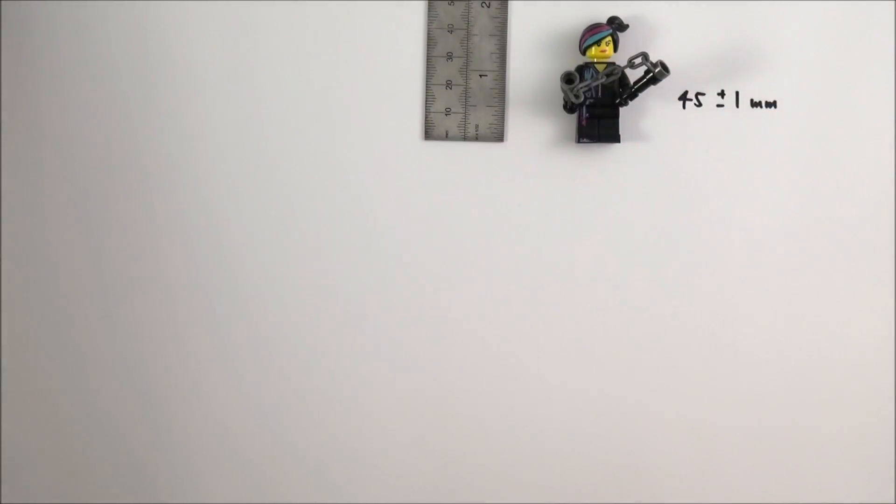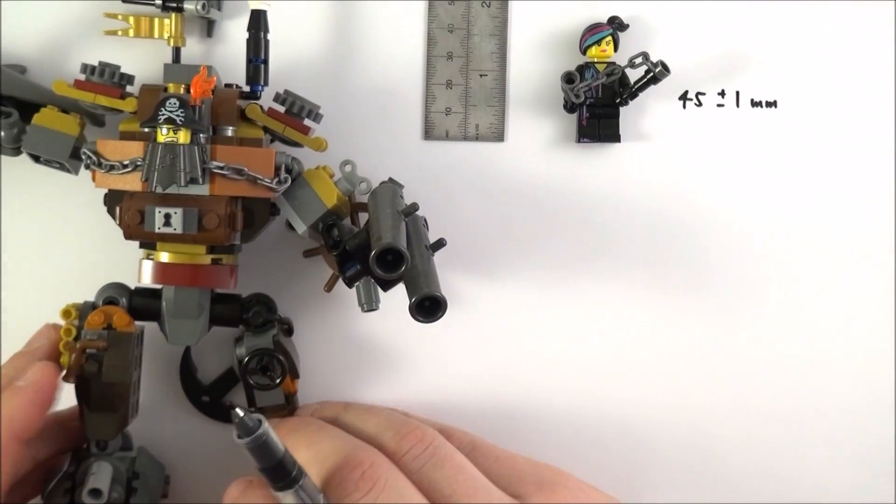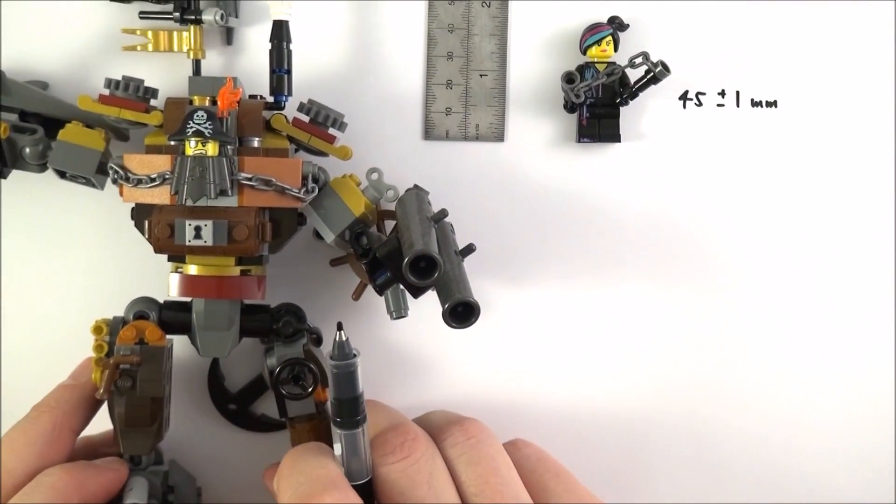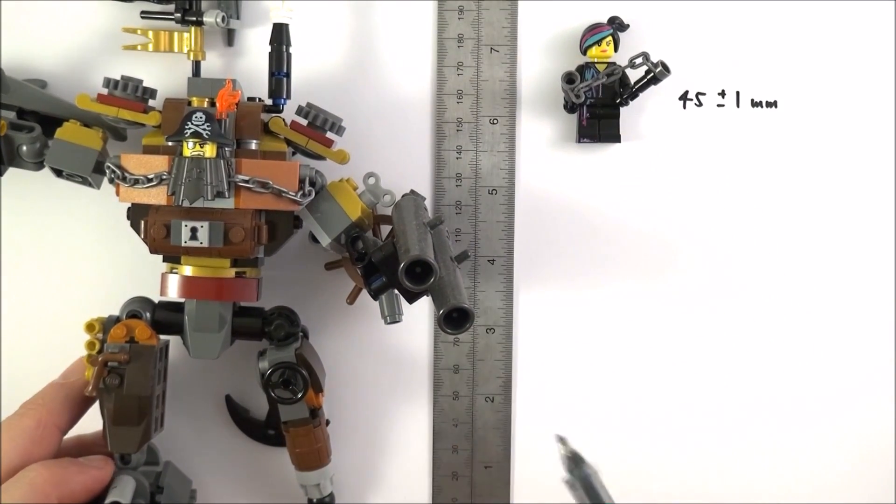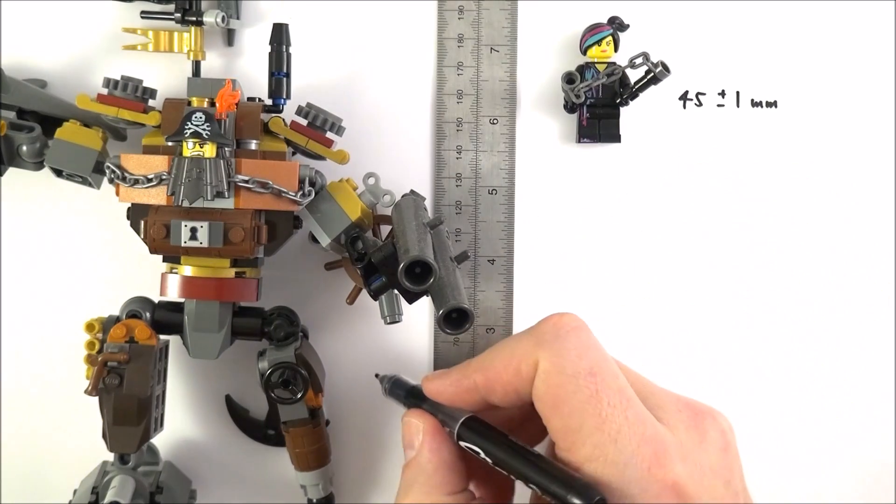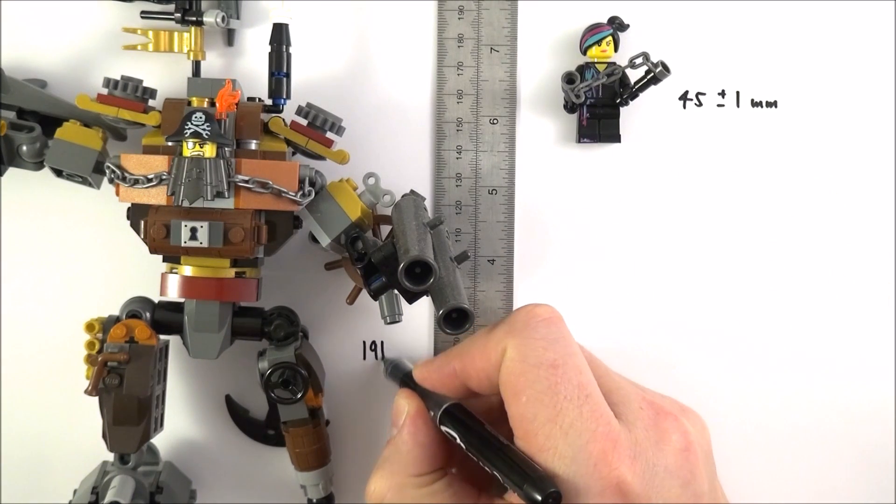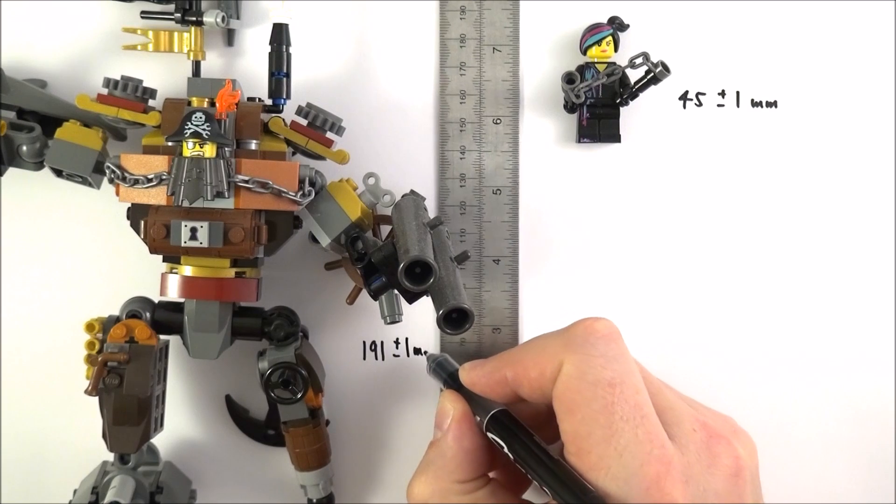But then I also have another figure which is even bigger. So here we have a larger figure, and if I measure the height of this figure what we find is that this one has a height of 191 millimeters, again plus or minus one millimeter.